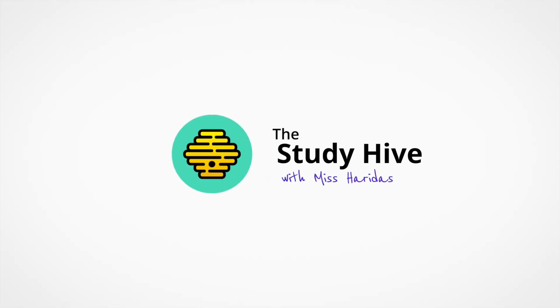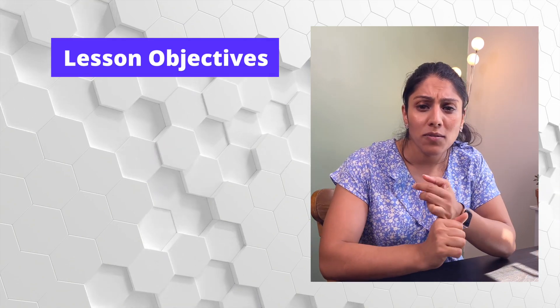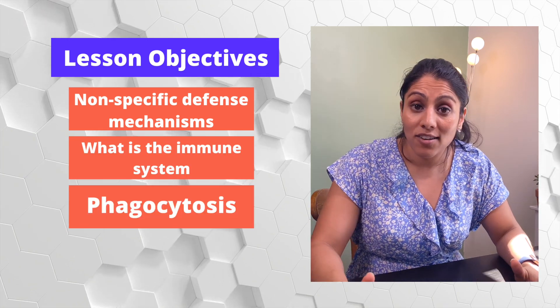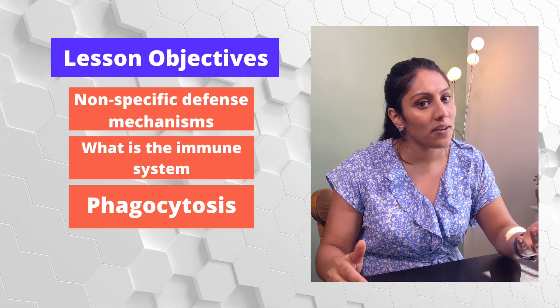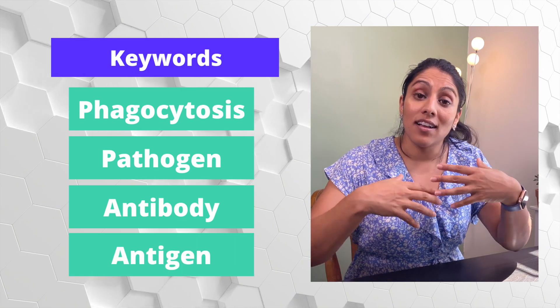Hi guys, it's Miss Harides here at the Study Hive. Today's lesson we're going to be looking at the immune system and how it's constantly in a war zone. The main learning objectives are: non-specific defense mechanisms, what the immune system is, what phagocytosis is, and antibody and anti-toxin production. Key words to pay attention to are phagocytosis, pathogen, antibody, and antigen, which I'll explain as we go through the lesson.